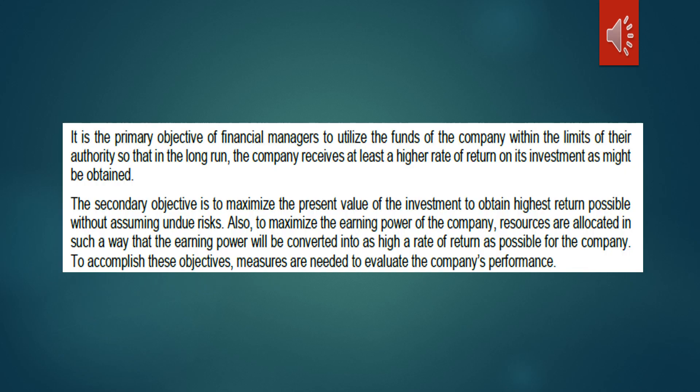In addition to capital budgeting, the primary objective of financial managers is to utilize the funds of the company within the limits of their authority so that in the long run, the company receives at least the higher rate of return on its investment. As for the secondary objective, it is to maximize the present value of the investment to obtain the highest return possible without assuming undue risk, and also to maximize the earning power of the company. Resources are allocated so that earning power will be converted into as high a rate of return as possible. Measures are needed to evaluate the company's performance.